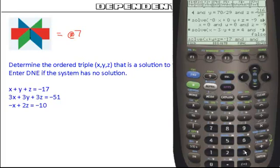Your next equation: 3x plus 3y plus 3z equals negative 51. And then the final equation: negative x plus 2z equals negative 10.